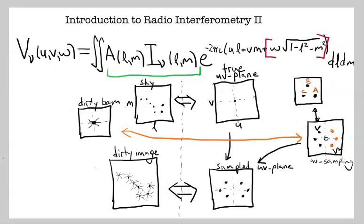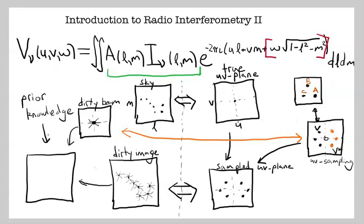The generic name for this process is called deconvolution. And deconvolution takes information about your dirty beam, your dirty image, and prior knowledge, and they feed them into something that tries to recover the true sky.